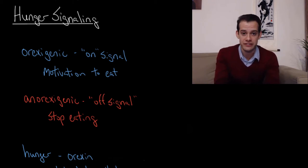So this on signal, this motivation to eat, is referred to as the orexigenic signal, and orexigenic means the source of appetite. And then we have the anorexigenic signal, which would be without the source of appetite. This would be the off signal that tells us to stop eating or indicates that we're full.